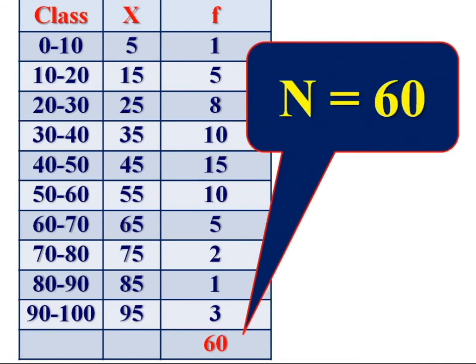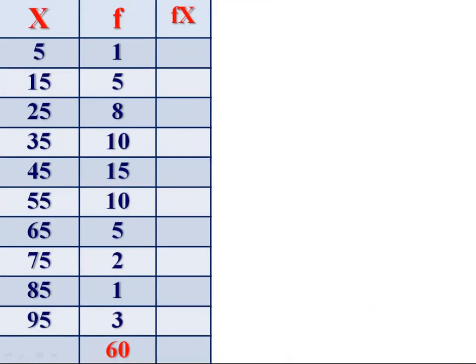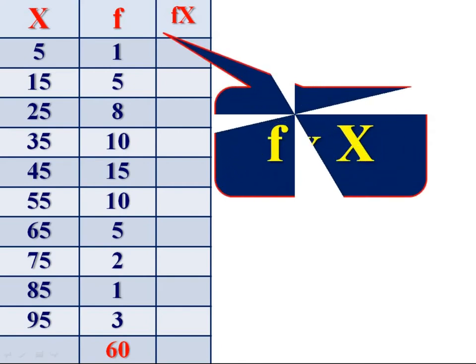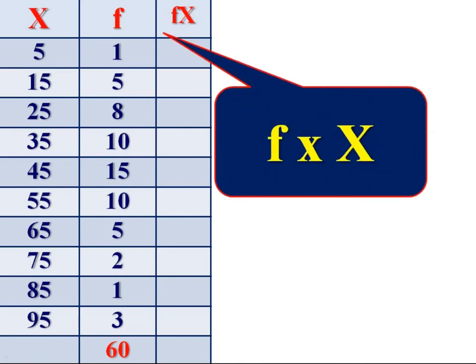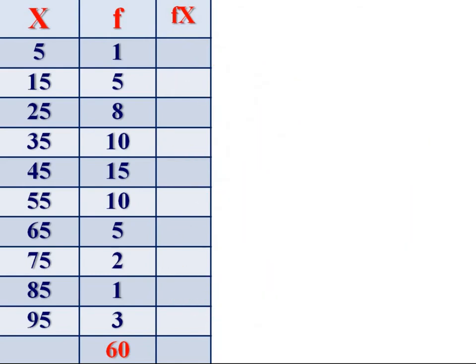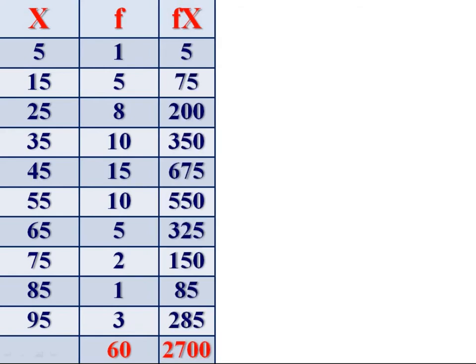For finding arithmetic mean, we have to multiply the frequency with the X column, f into X. The product of f and X is the summation of each class. So multiply the value of X with the frequency. 5 into 1 is 5, 15 into 5 is 75, 25 into 8 is 200 and so on. Obtain its total, 2700. Sigma fX, 2700.